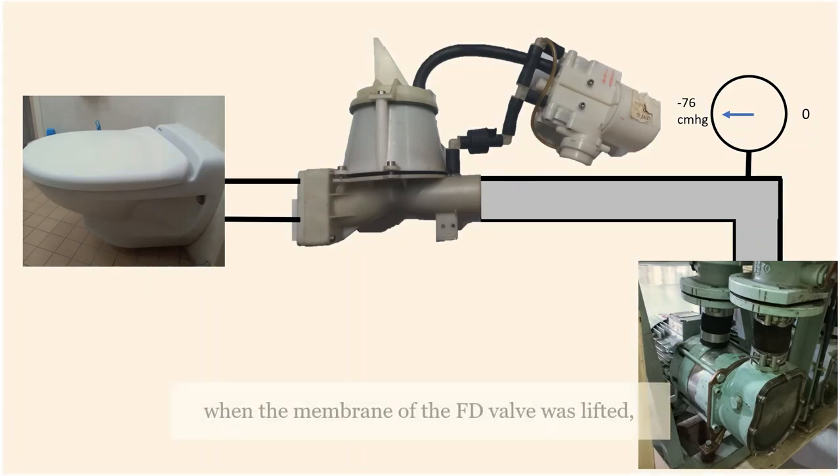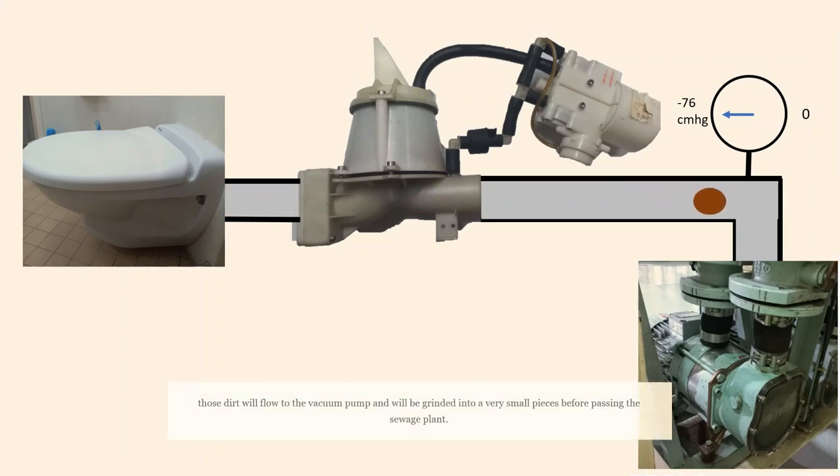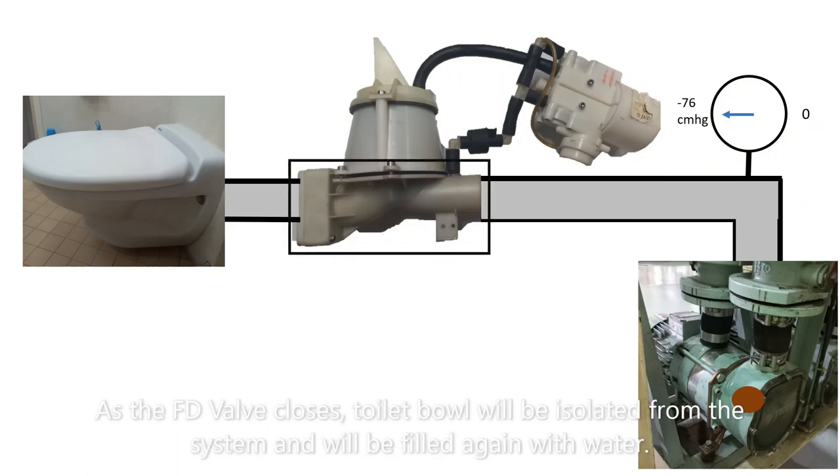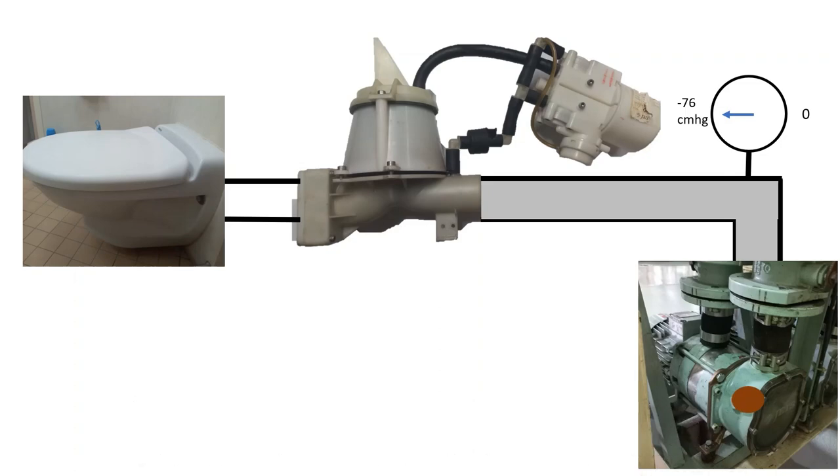When the membrane of the FD valve is lifted, the dirt will be sucked due to the vacuum created by the pump and will be ground into very small pieces before passing the sewage plant. As the FD valve closes, the toilet bowl will be isolated from the system and will be filled again with water.